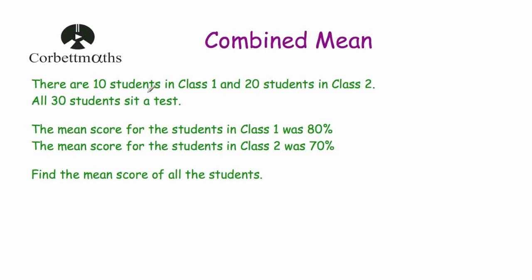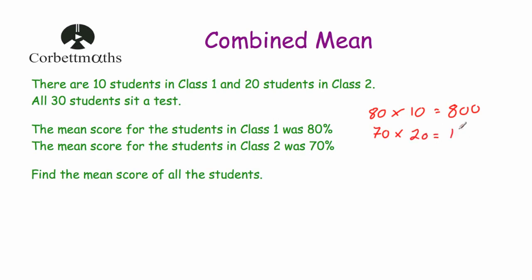Our next question says there are 10 students in Class 1 and 20 students in Class 2, and all 30 students did a test. The mean score for the students in Class 1 was 80%, and the mean score for the students in Class 2 was 70%. Work out the mean for all the students. So the mean for Class 1 was 80%, and if we multiply 80 by 10 — the number of students — that will give us the total, which is 800. Then for Class 2, we take our 70 and multiply that by 20 students, which gives us a total of 1,400.